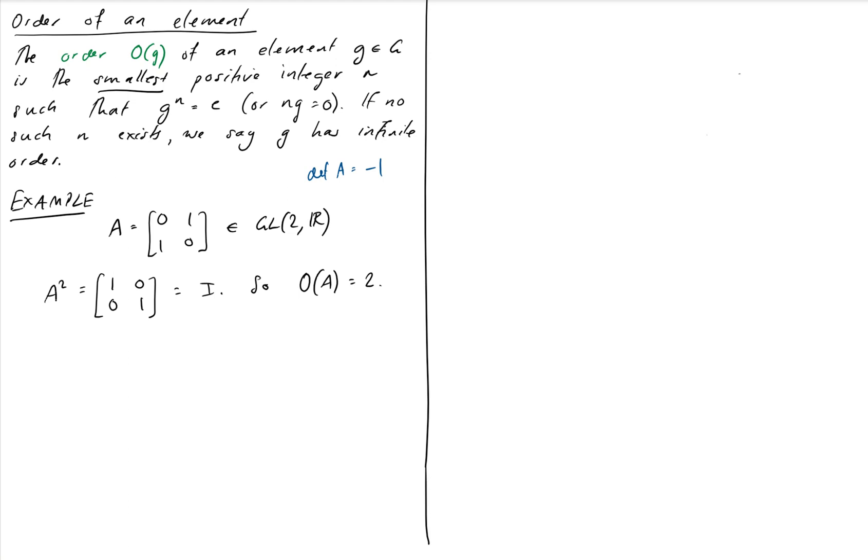Note we have an infinite group. There are infinitely many invertible matrices with real entries in 2×2. But we have an element with finite order, so that's a thing that can happen.